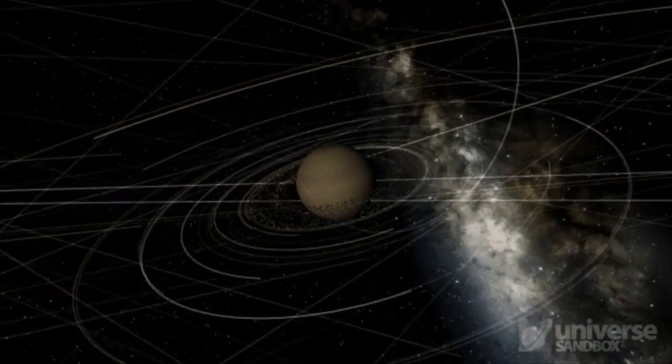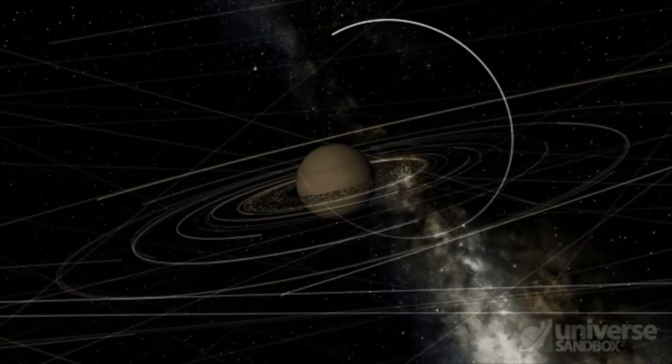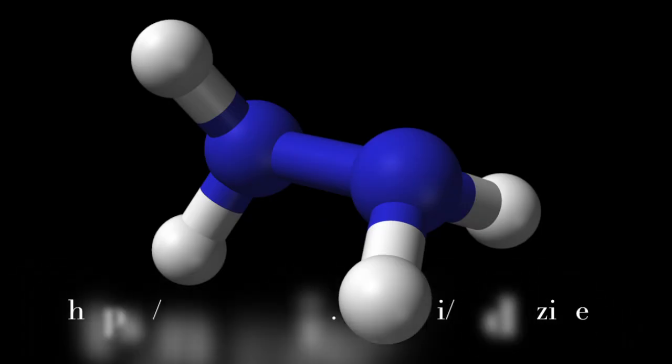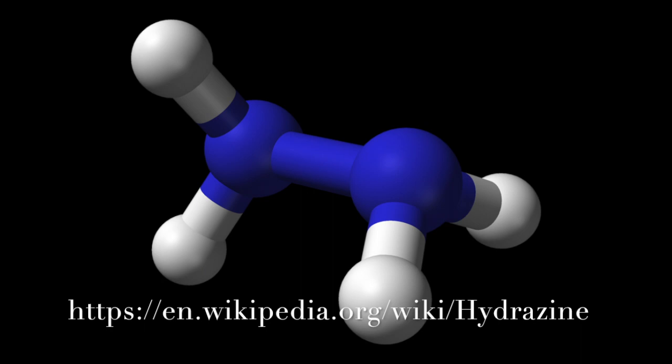To move Cassini into and out of other orbits, and position itself relative to Earth, Cassini used four thrusters with hydrazine used as its propellant.